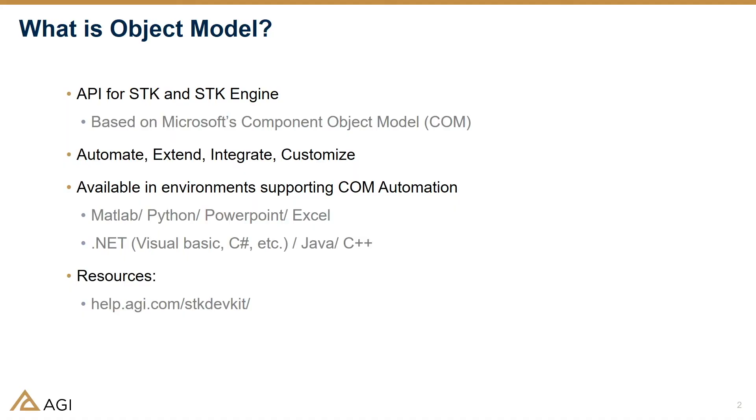So what can you do with object model? You can automate SDK — you can have a scenario automatically run, have some analysis automatically run with a script. You can extend the capabilities of SDK. I like to think it really multiplies what you can do with SDK by a factor of 10. I use the object model all the time for any sort of analysis I need to do. You can integrate with other tools and customize your own workflows.